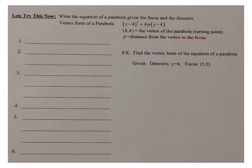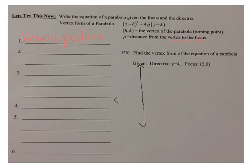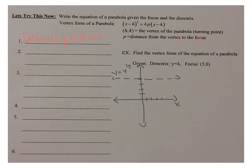Let's look at the first example: find the vertex form of the equation of a parabola given the directrix y = 4 and the focus (5, 0). Step one is to draw a picture. I'll draw my x-axis and y-axis, then draw the directrix y = 4 as a horizontal line, and plot the focus at (5, 0). The directrix is labeled d and the focus is labeled f.